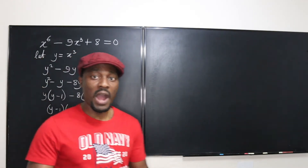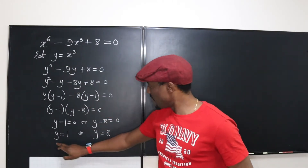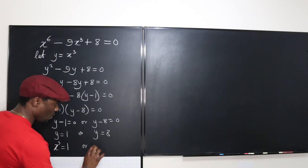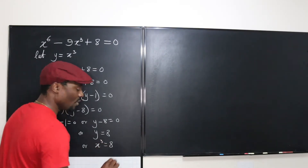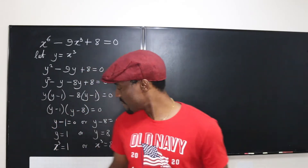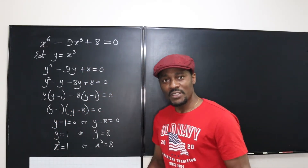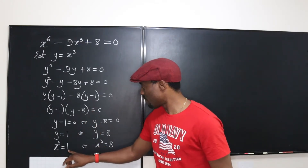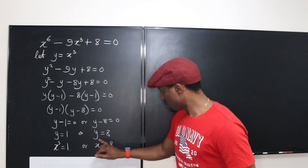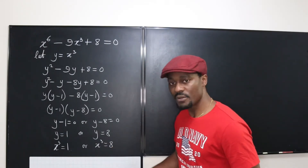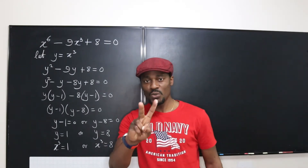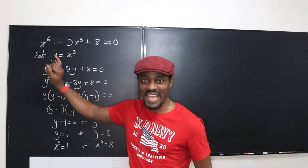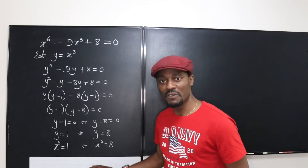So y minus 1 equals zero or y minus 8 equals zero, which tells me that y equals 1 or y equals 8. Now remember that y from the beginning was x cubed. So I can replace this and say x cubed equals 1 or x cubed equals 8. What most students will do at this point is take the cube root of both sides and get one answer, since the cube root of 1 is 1 and the cube root of 8 is 2 — giving two answers. Don't do that, because you're supposed to get six answers.